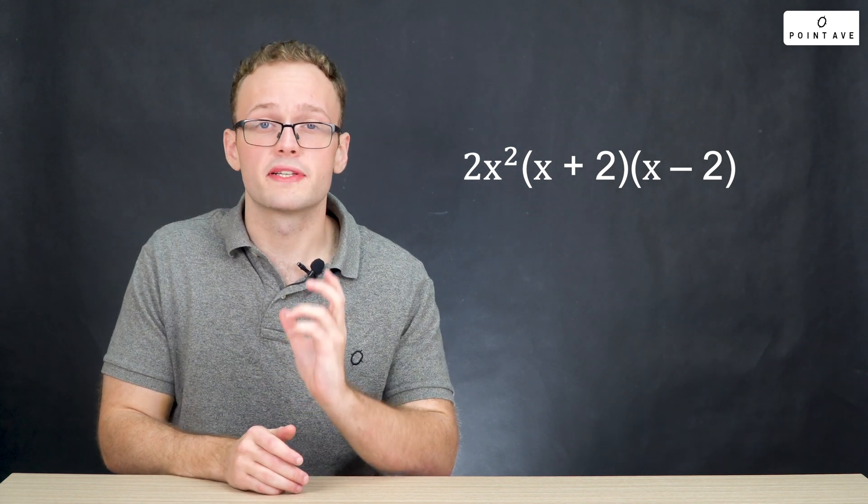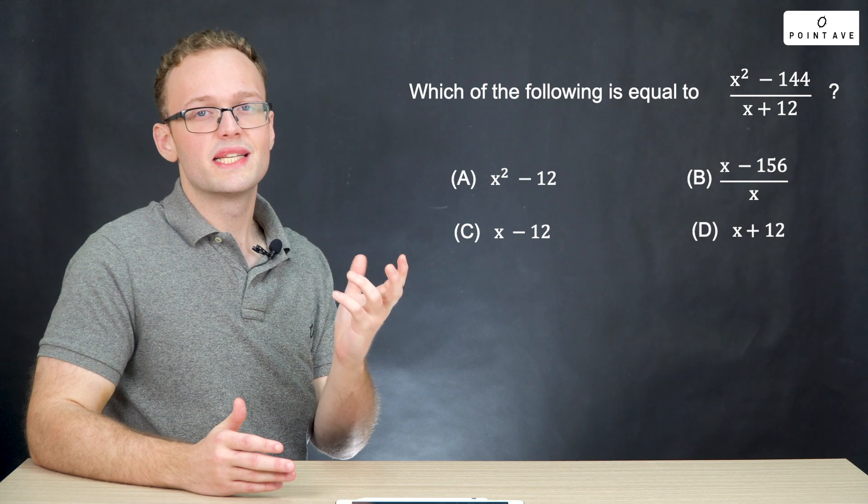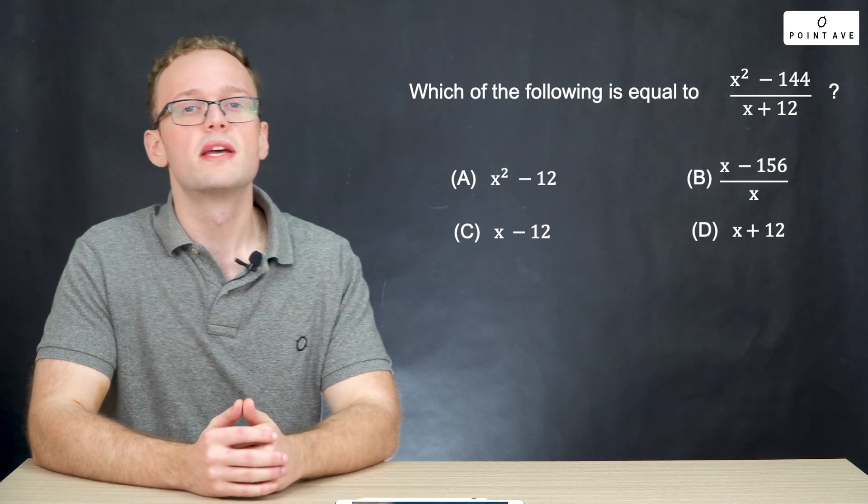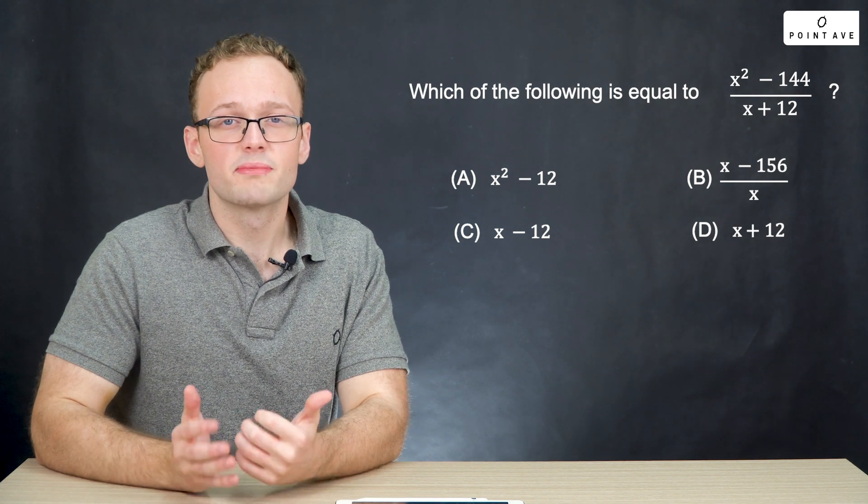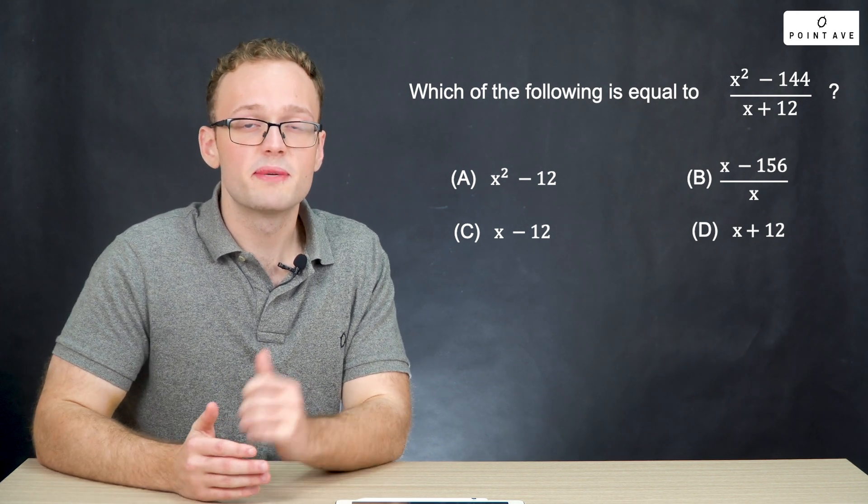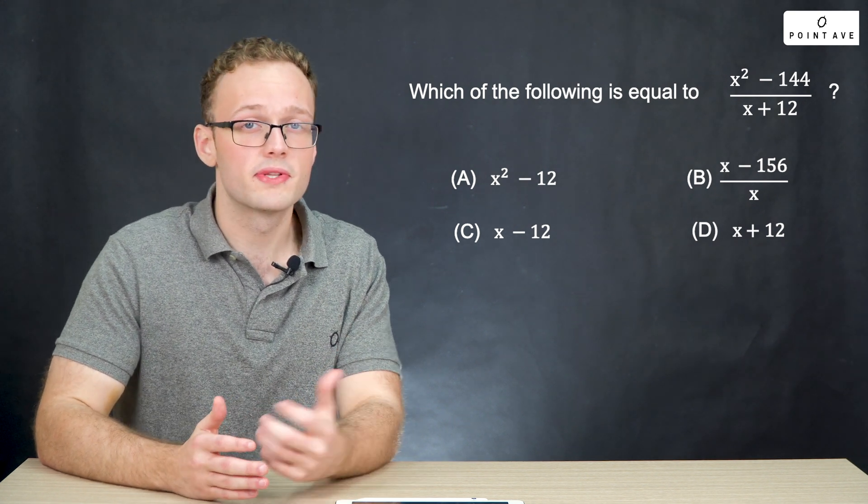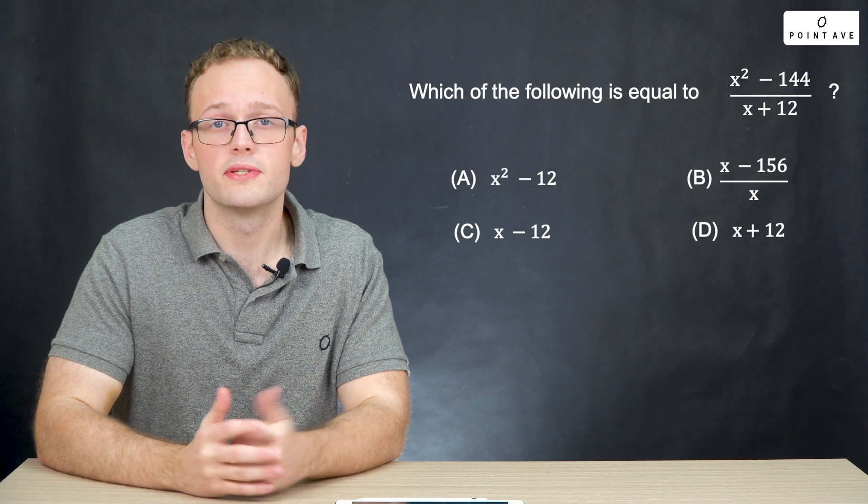Let's now learn perfect squares with another example. This problem asks us which of the following is equal to this expression here, which we call an equivalent expressions type problem. Whenever we see these problems, we need to simplify, simplify, simplify. Sometimes the problem, sometimes the answer choices, and sometimes both. In this case, we just need to simplify the problem.